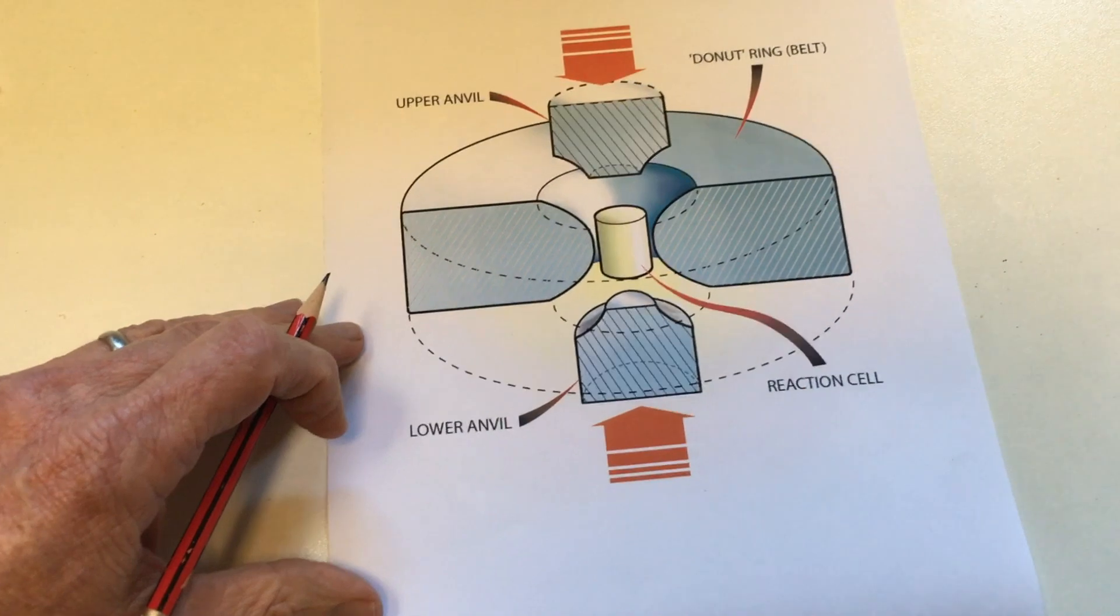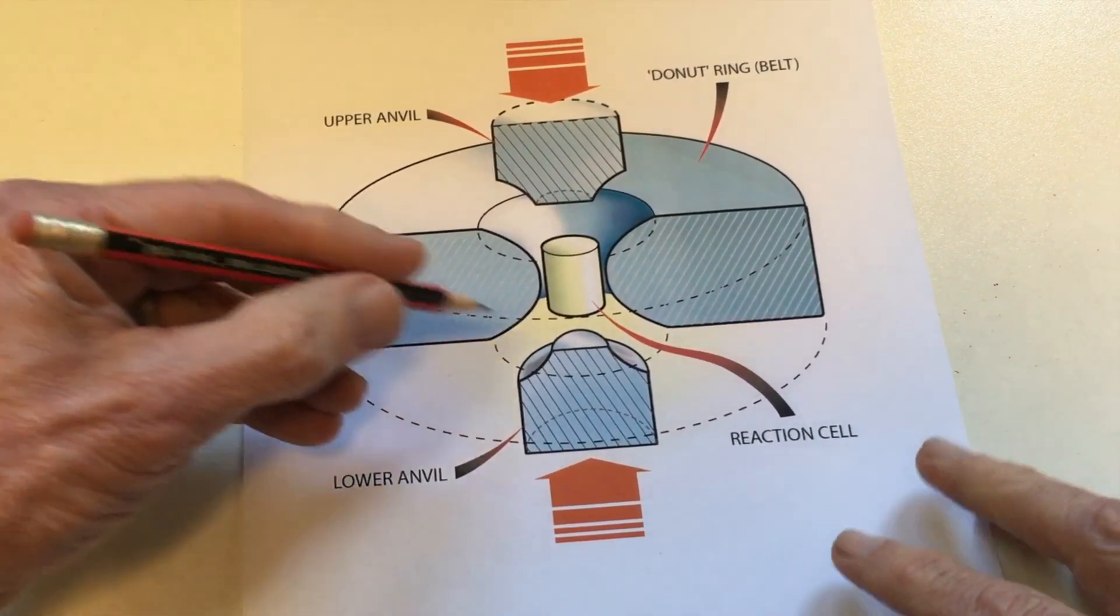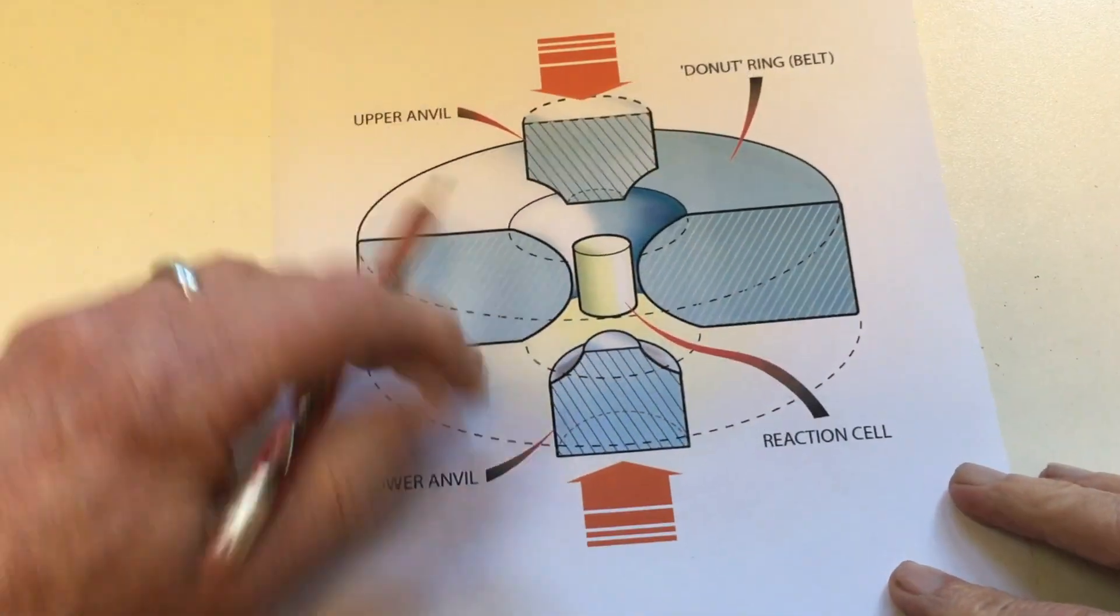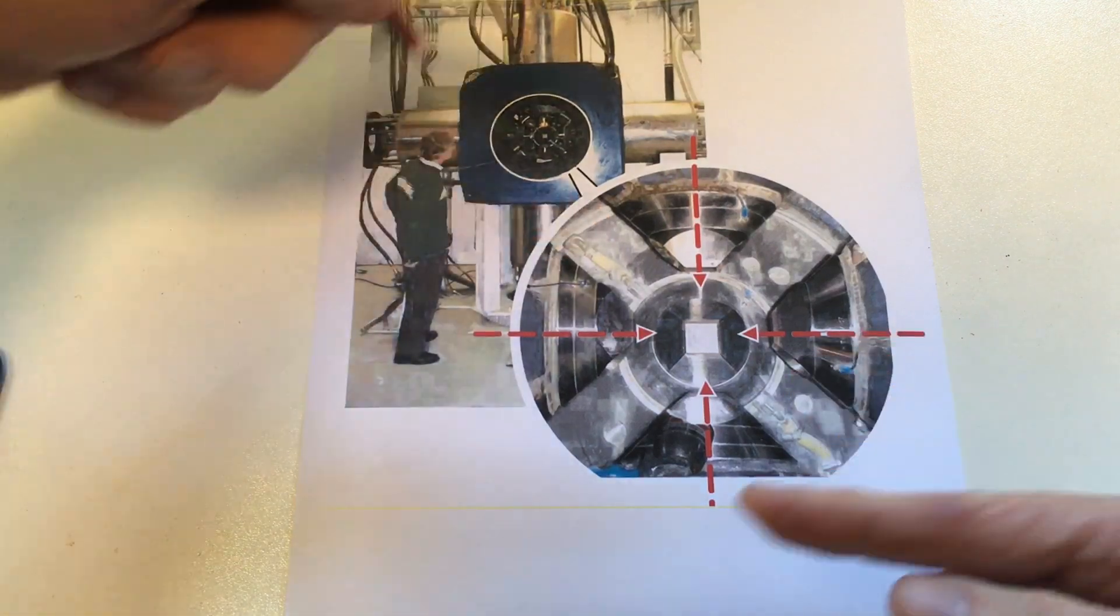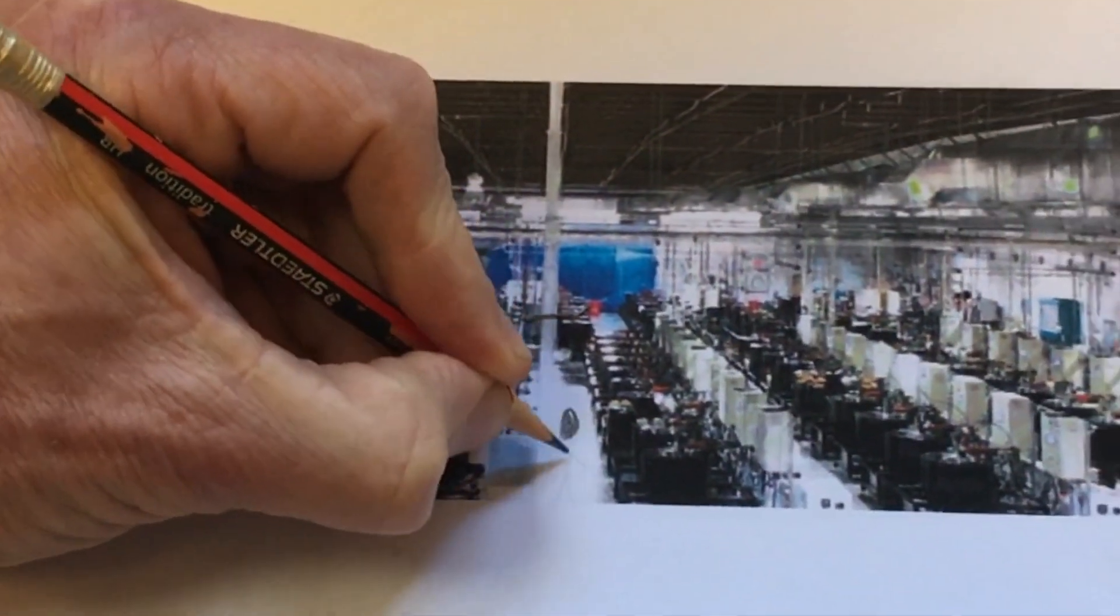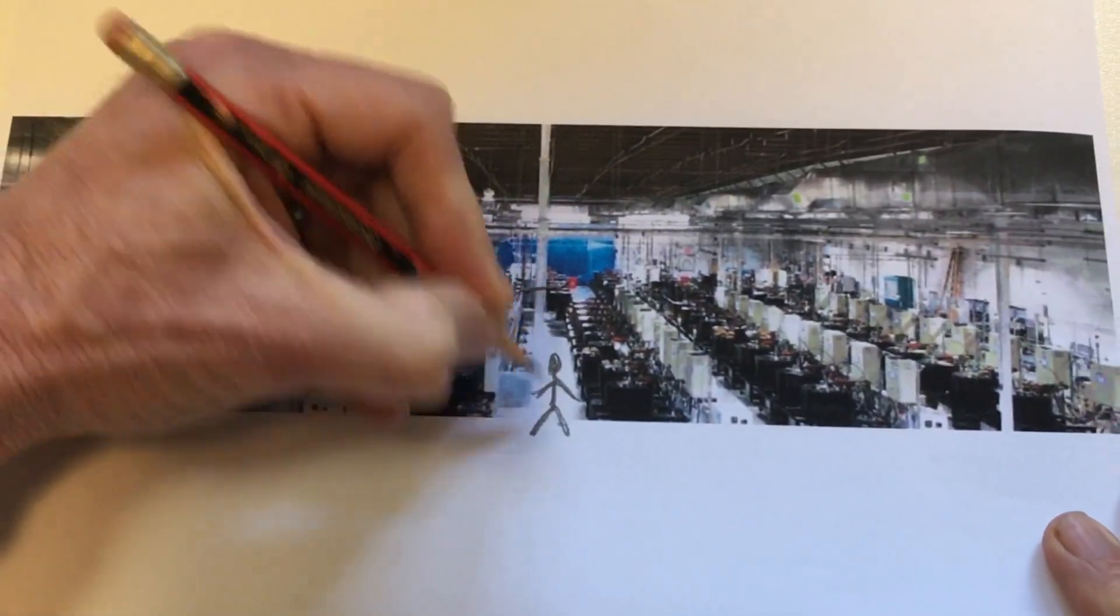The pressure is achieved by several methods. One method comprises a belt that has opposing anvils pressing against a cell that is constrained within a doughnut ring. Another method uses six opposing anvils, though the most popular one for production purposes is a split-sphere method pioneered in Russia. It has a small footprint, so many of the units can be installed on a factory floor.